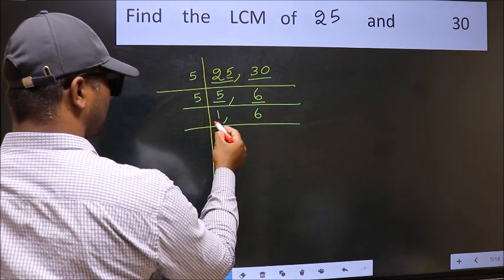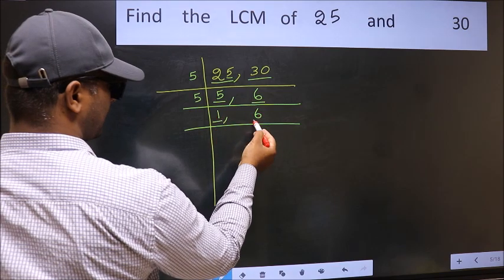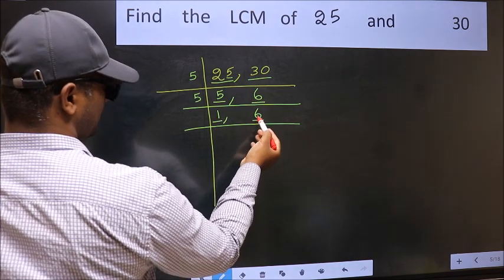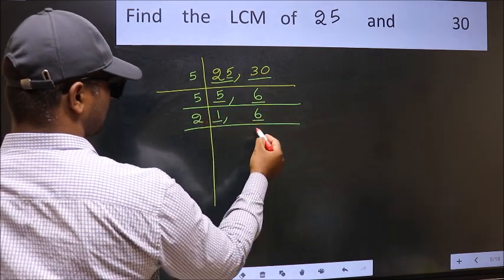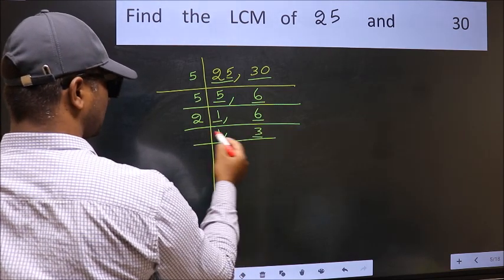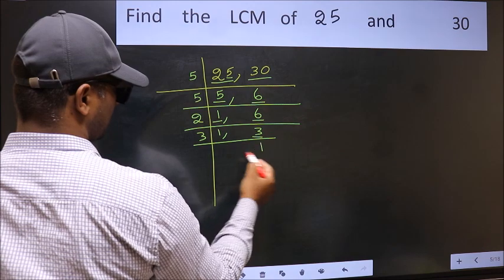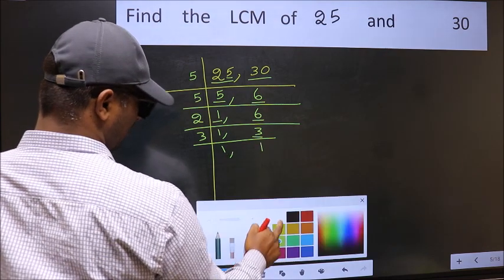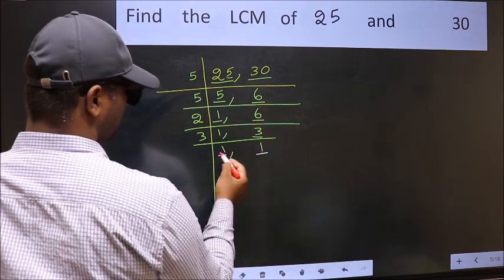Now we got 1 here. So focus on the next number 6. 6 is 2 times 3. Now here we have 3. 3 is a prime number, so 3 divided by 1 is 3. So we got 1 in both places.